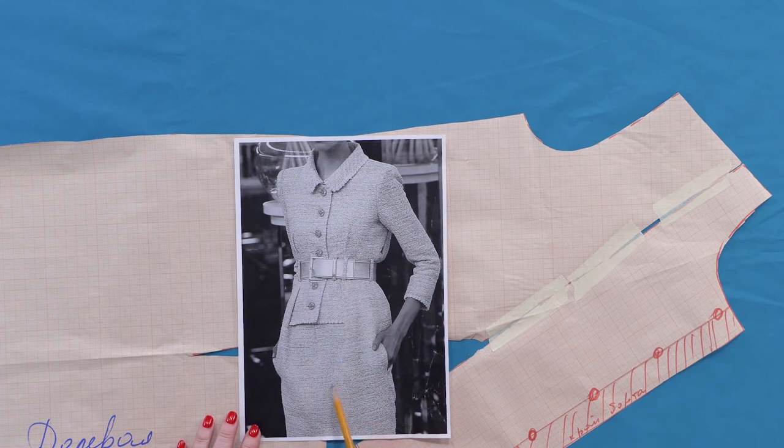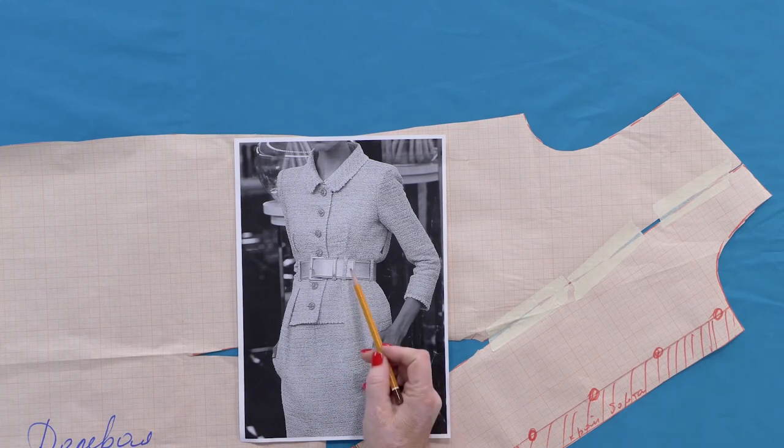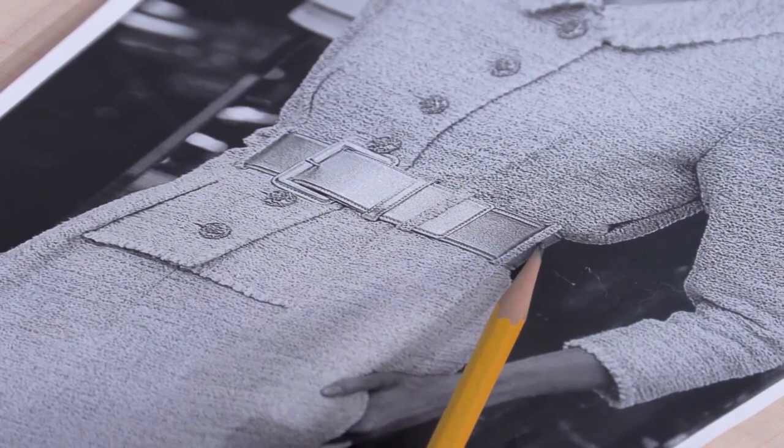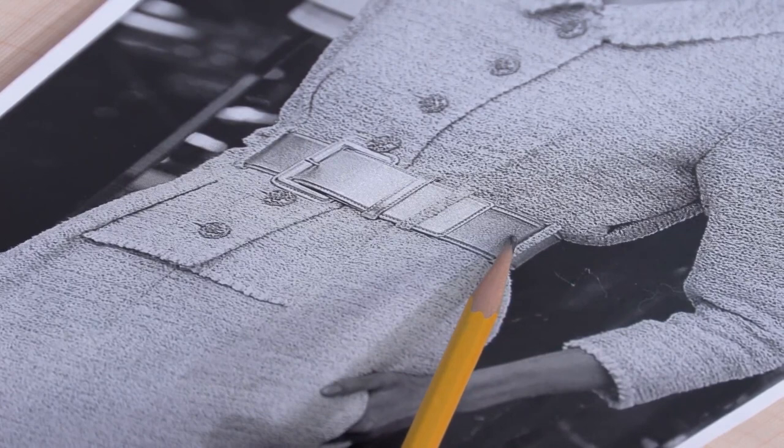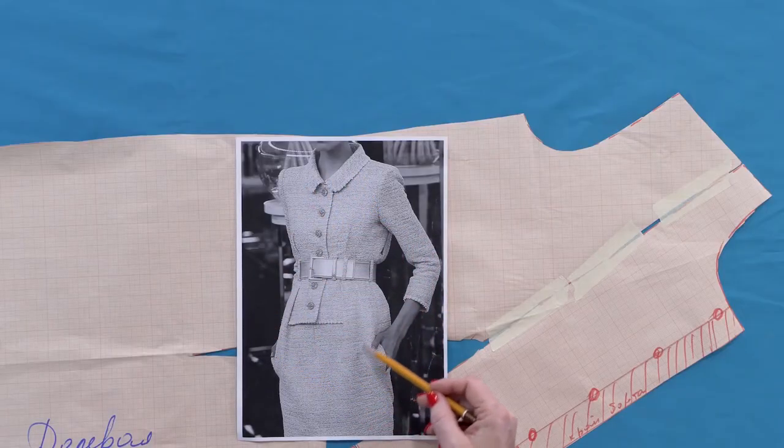These lines on the crosswise grain. And the lines on the skirt, also on the crosswise grain. That means that there is a waist seam here. This part is very complicated.